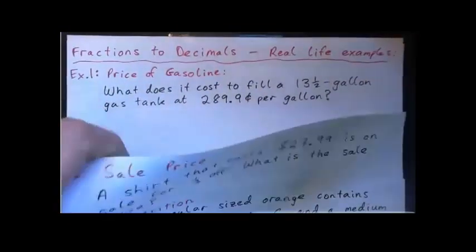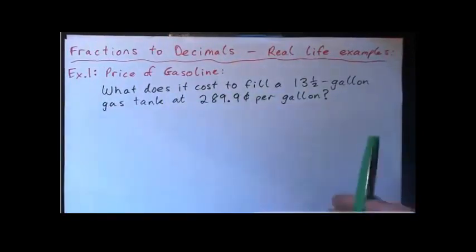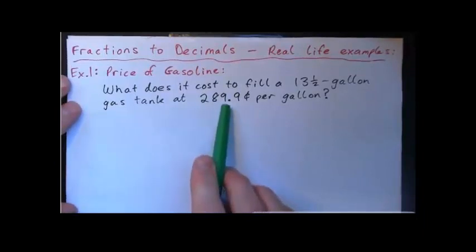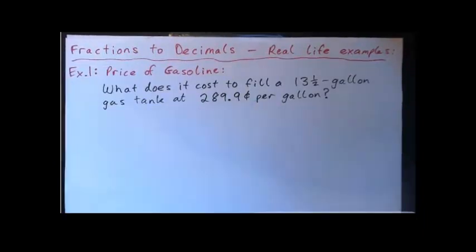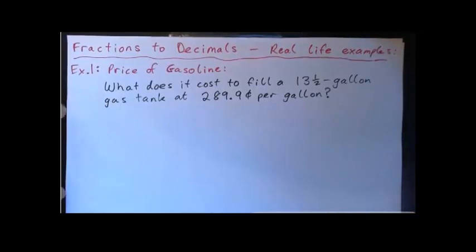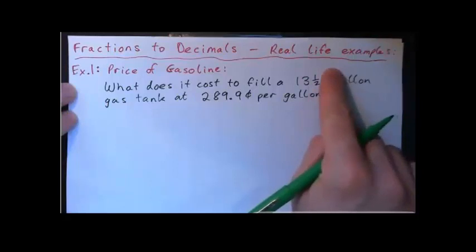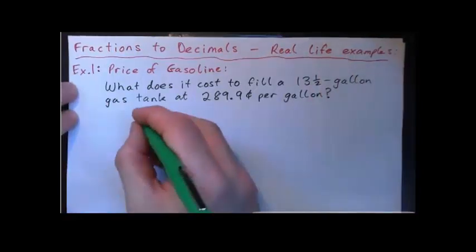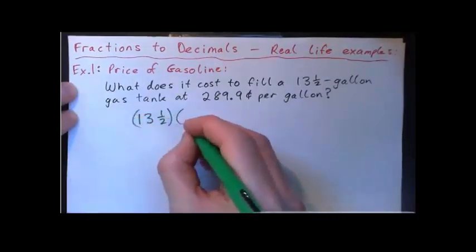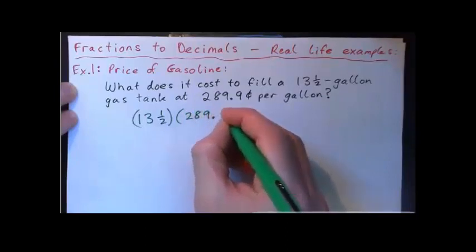So we'll start with example 1. What does it cost to fill a 13.5 gallon gas tank at 289.9 cents per gallon? So it's basically $2.90, but we'll get the exact cent amount this way. So what do we need to do? For one gallon it costs this, and we want the cost for 13 and a half gallons. So don't we want to do 13 and one half multiplied by 289.9?